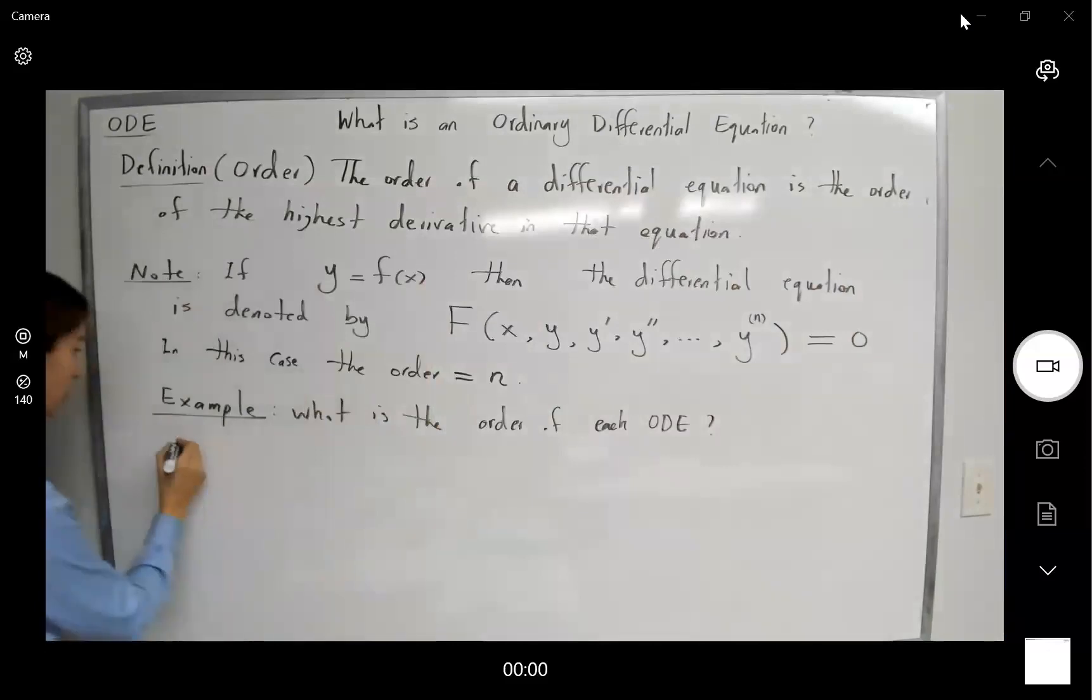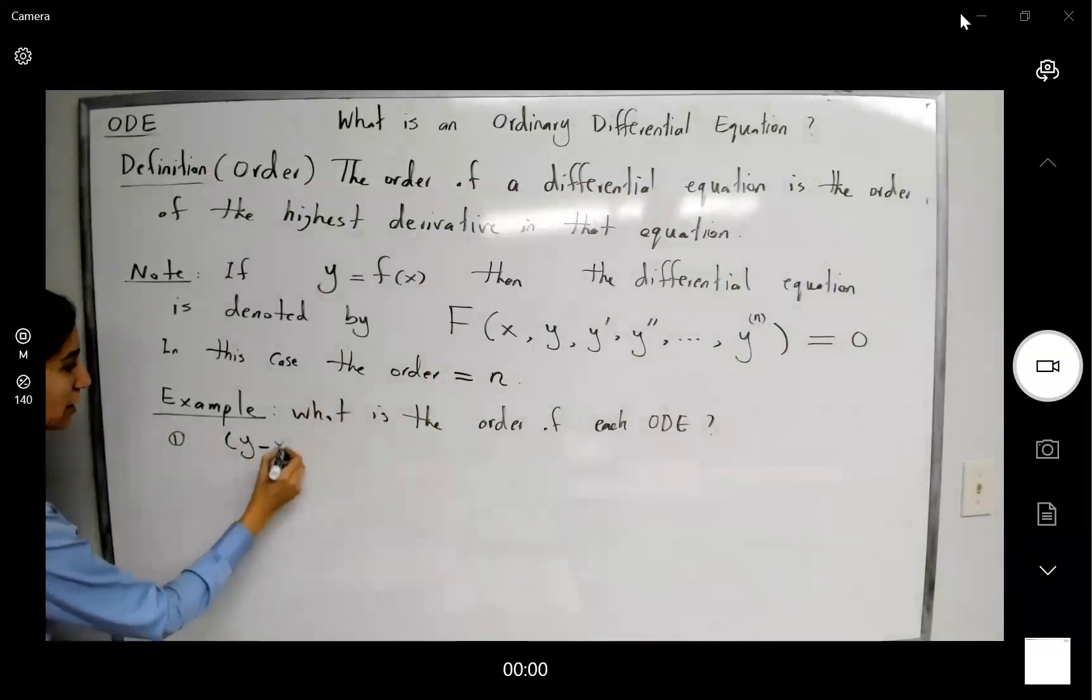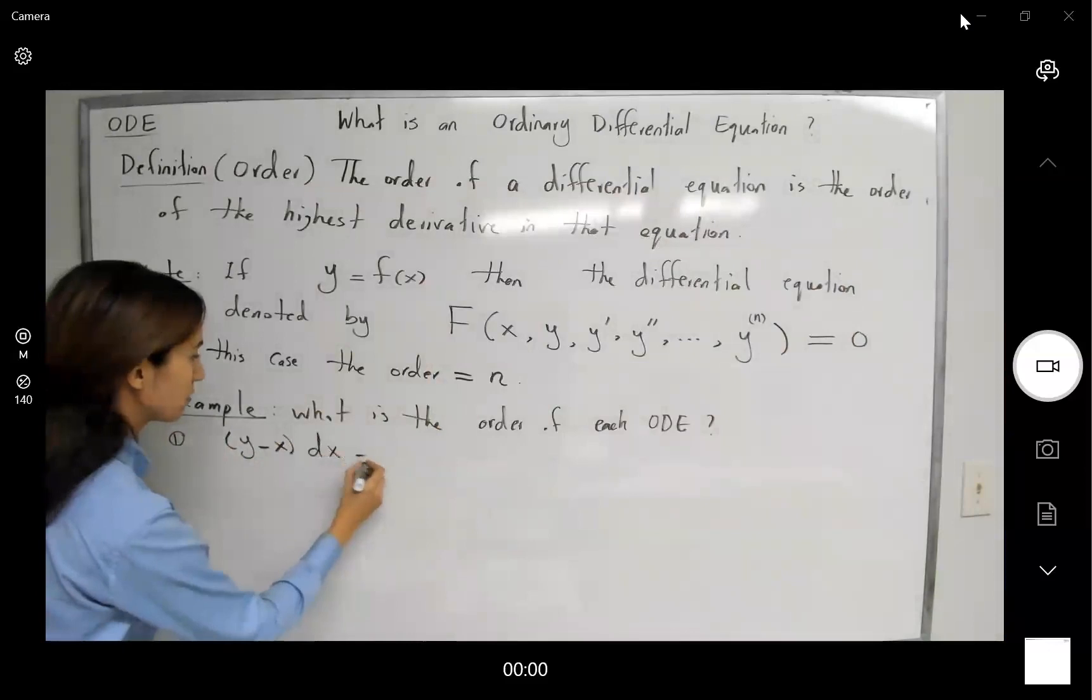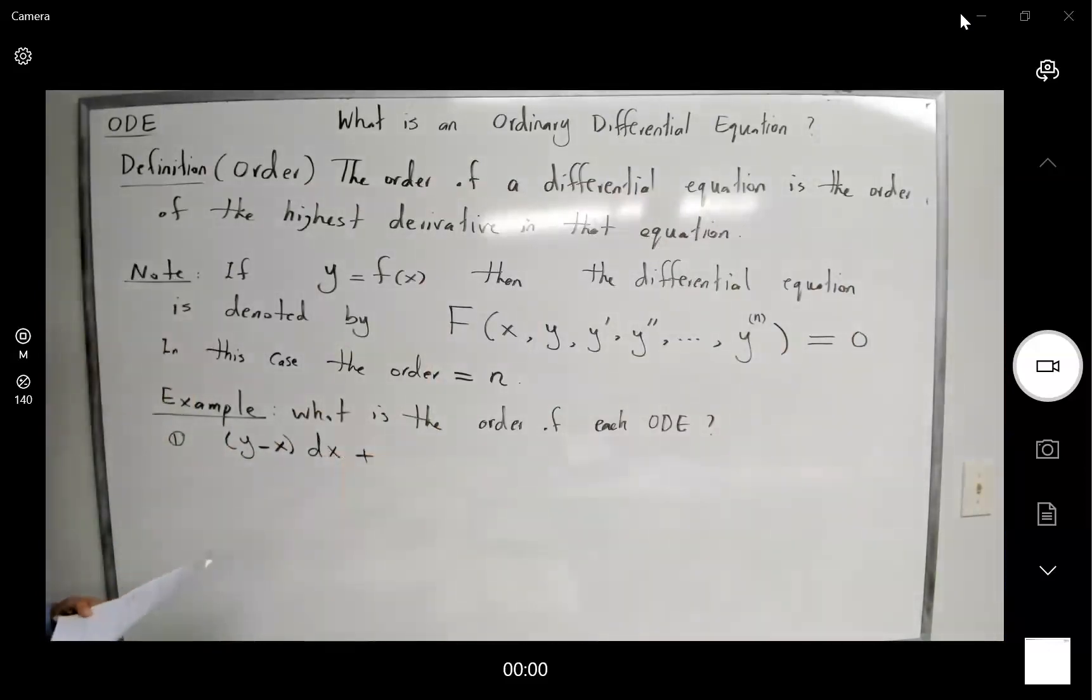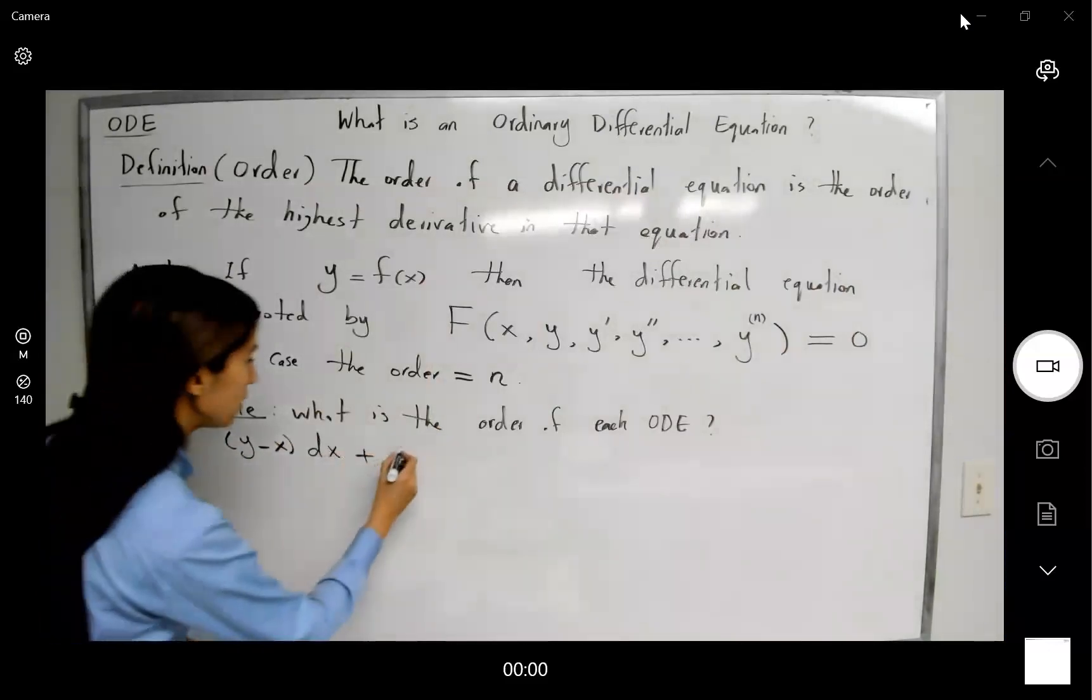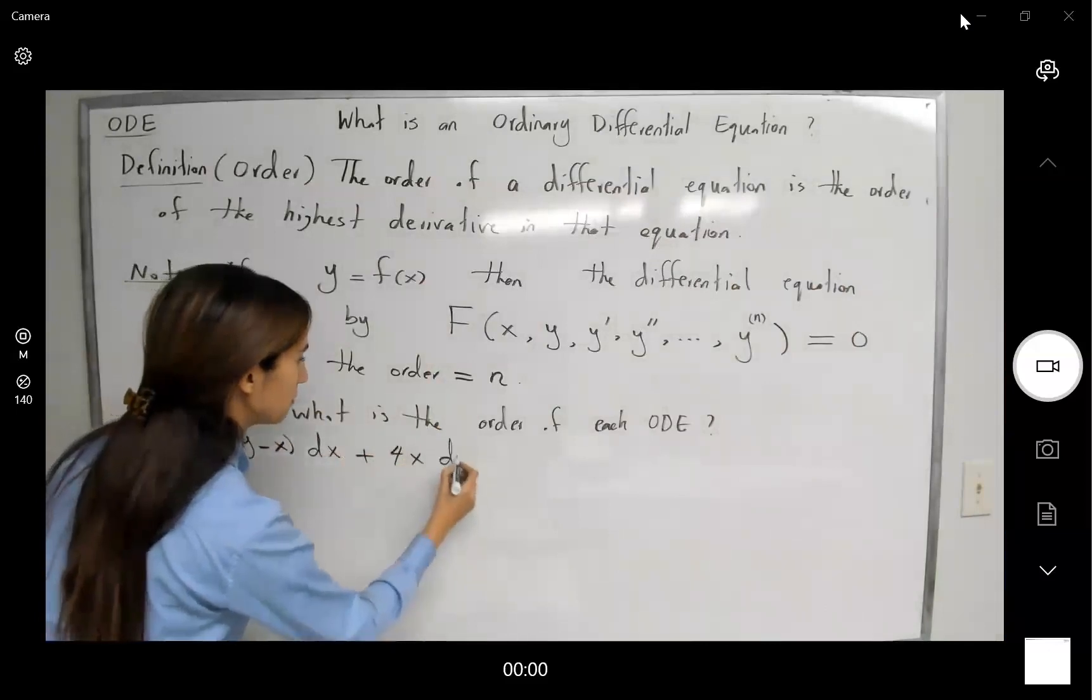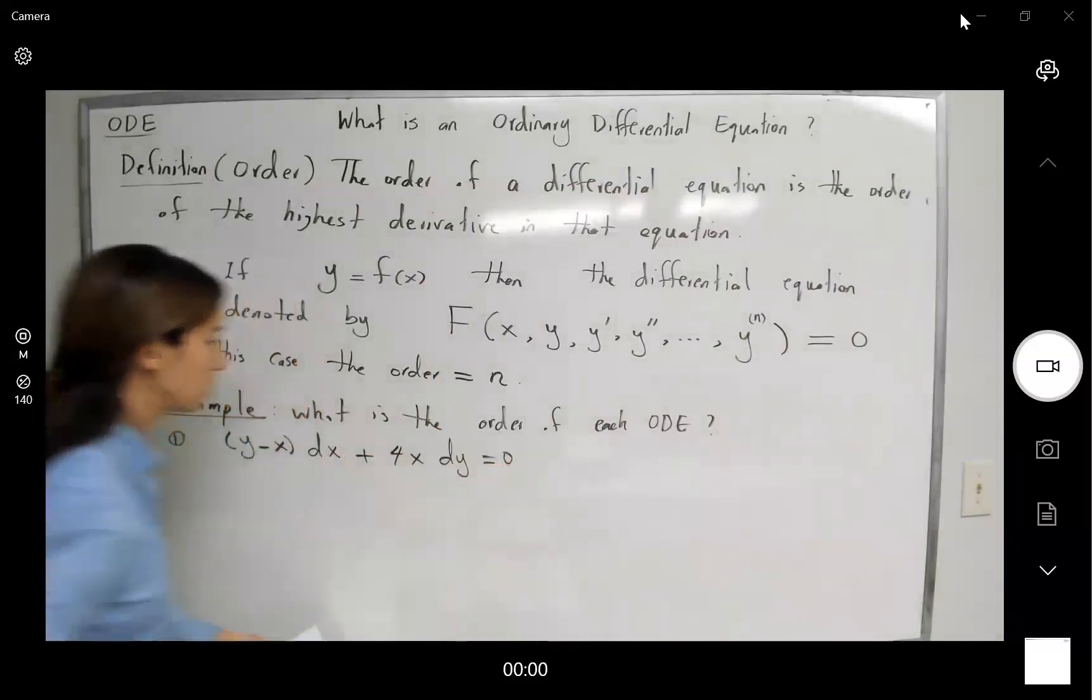So the first one is, well, here we have y minus x times dx plus 4x dy equal to 0.